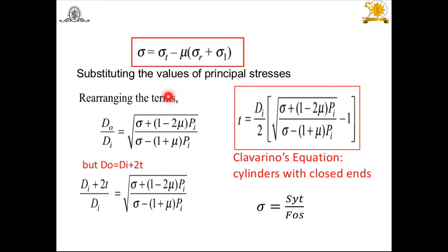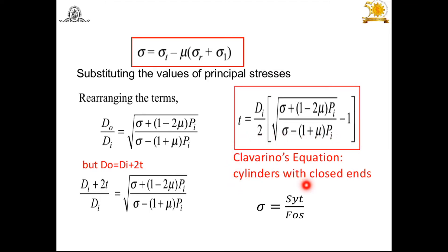Substituting these values and rearranging, we get Do/Di as an expression. Since Do = Di + 2t, substituting and solving for t gives: t = (Di/2) * [sqrt((sigma + (1 - 2*mu)*Pi) / (sigma - (1 + mu)*Pi)) - 1]. This is Clavarino's equation, which is applicable to thick cylinders made of ductile material with closed ends. Here sigma = Syt / FOS is the allowable stress.